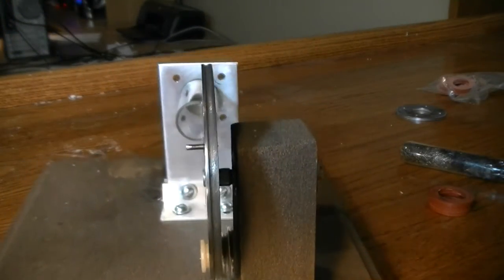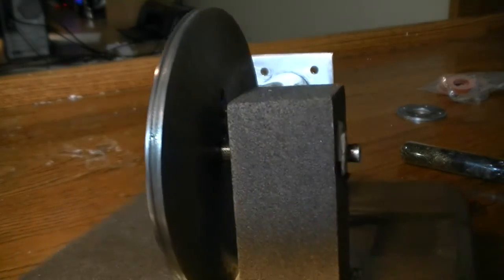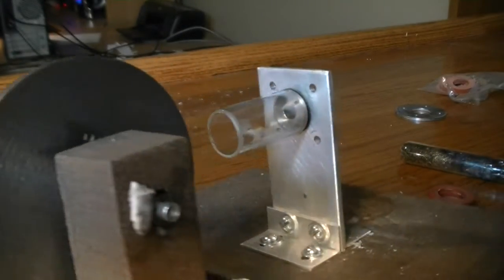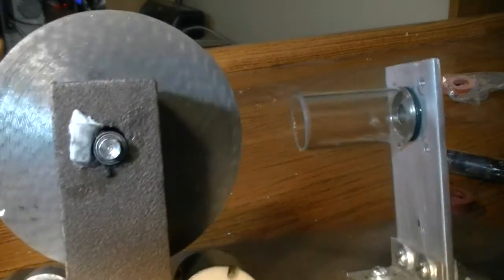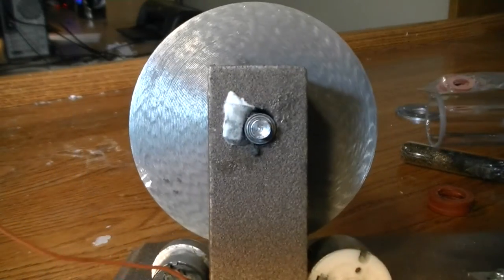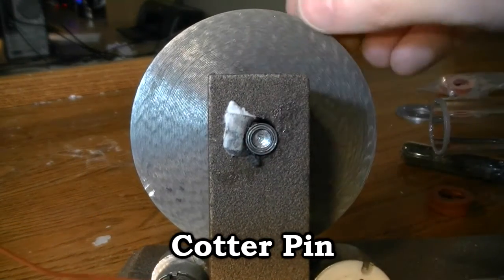This flywheel fits nicely into two bearings that fit tightly into the flywheel support column. There's nothing really holding the flywheel into the flywheel support column, but I have drilled some holes in the flywheel shaft for a cotter pin.